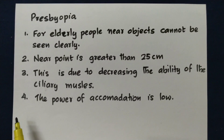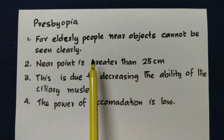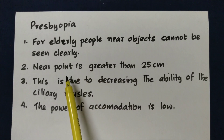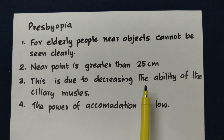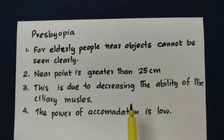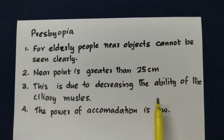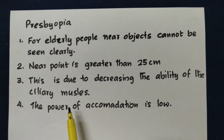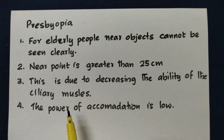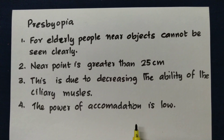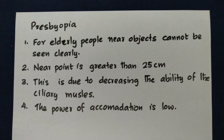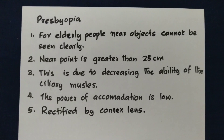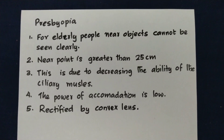Presbyopia is known as the old-age defect. Elderly people are not able to see near objects clearly. The near point is greater than 25 cm and they are able to see at infinity. This is due to a decrease in the ability of ciliary muscles — muscles become weak and cannot increase the power of the lens. Power of accommodation is low. Presbyopia is rectified by a convex lens.